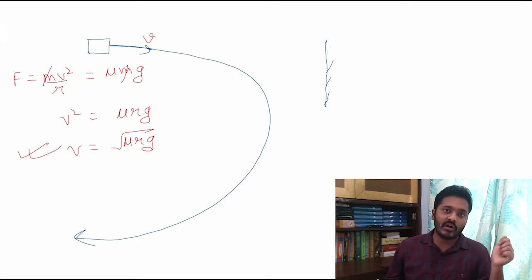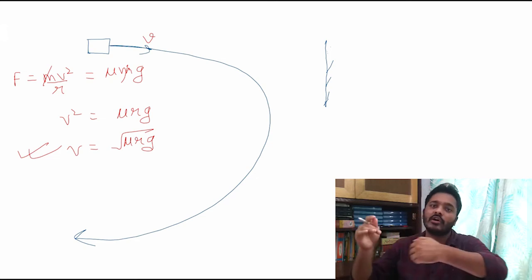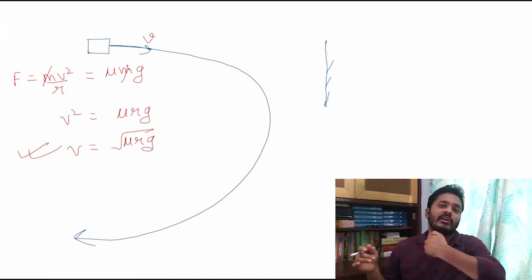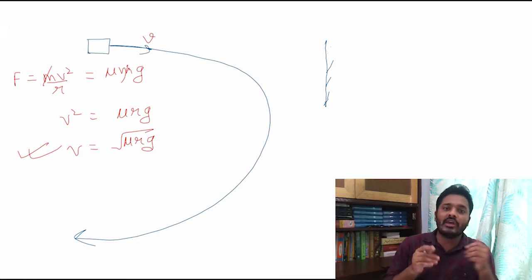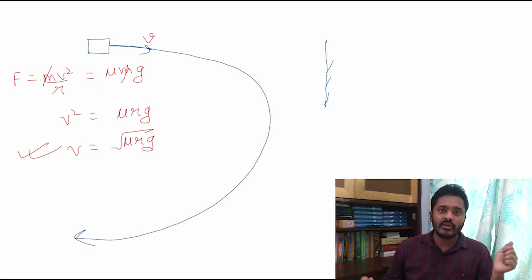√(μrg) is the maximum velocity which the friction can balance out for circular motion. If the speed is higher, the car will not successfully do a circular turn. But because I'm talking about a vertical wall, we have a much broader region to consider.